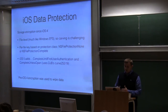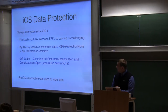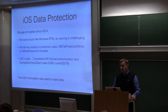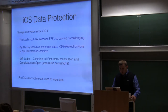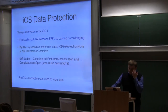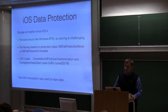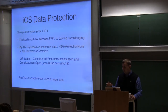iOS 5 added two new classes. First, 'Complete Until First User Authentication' prevents access until the user has unlocked the device at least once; after that, the file remains accessible until the device is powered off or rebooted. Second, 'Complete Unless Open' — based on public key crypto using Daniel Bernstein's Curve25519 — allows creating and writing to a file at any time even when locked, but once you close the file handle, it can only be reopened when the device is unlocked. This is useful for receiving email in the background or taking pictures without unlocking.